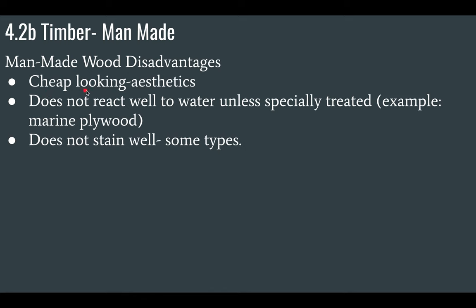Some disadvantages of man-made wood: it can look cheap, so aesthetics is a big reason people prefer natural wood. It often does not react well with water unless specially treated, like marine plywood — which can handle ocean environments. Regular man-made wood will delaminate, meaning the plies come apart, or if it's particleboard or MDF, the structure will swell and be destroyed. It also doesn't stain well — plywood stains acceptably, but MDF does not.